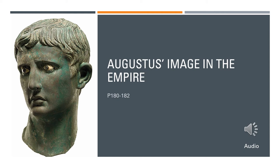We've looked at a number of buildings and statues that would have been found at Rome itself, and in particular we've looked at two prescribed sources in great detail. The textbook mentions the building program of Agrippa, which you've got a PowerPoint on, but the prescribed sources for that are the Forum of Augustus, the Temple of Mars Ultor, and the Ara Pacis. But these are also prescribed sources and we're going to have a quick look at Augustus's image in the Empire, not in Rome itself.